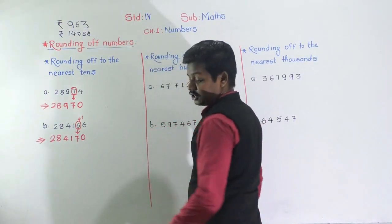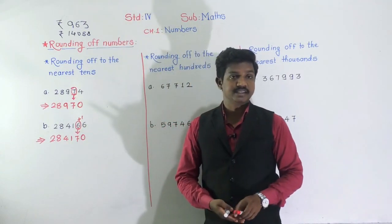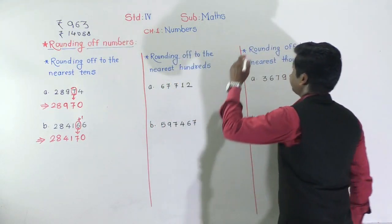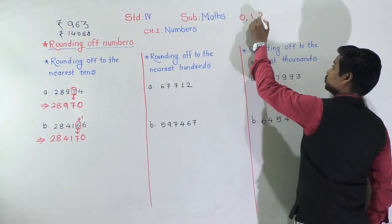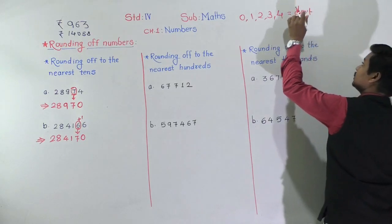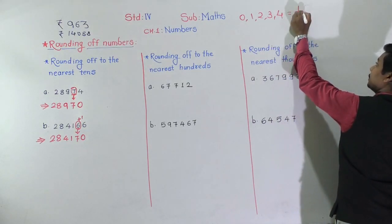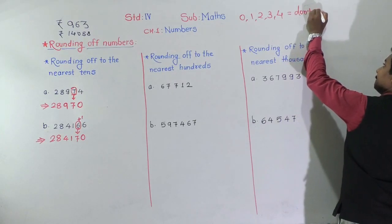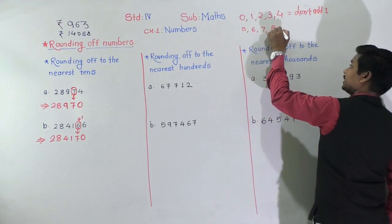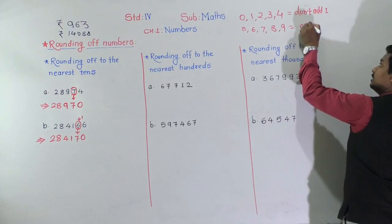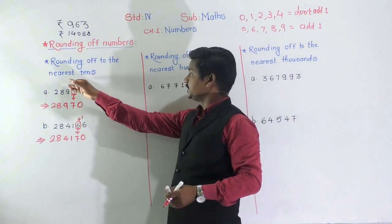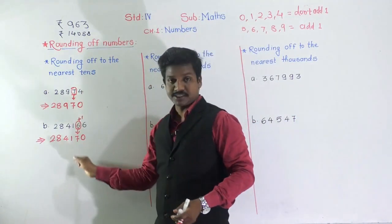So this is how we round off a number to the nearest tens. Just keep in mind: if the next digit is 0, 1, 2, 3, or 4, don't add 1. If the next digit is 5, 6, 7, 8, or 9, we add 1 to that particular place digit. This rule applies for the tens place digit when rounding to nearest tens.